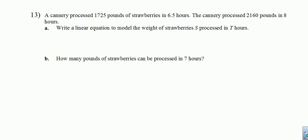All right, number 13. Probably the most complex problem on the test. Not probably, it is. The cannery processed 1,725 pounds of strawberries in 6.5 hours. The cannery processed 2,160 pounds in 8 hours. Part A, write a linear equation to model the weight of strawberries S. We're modeling S processed in T hours. So if we're modeling S in T hours, we know it's S equals something with a T.